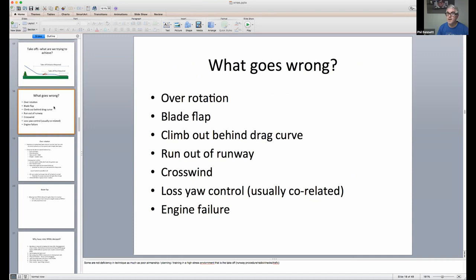So, take-offs. What goes wrong? I'm going to rattle through these because we've got some material left to cover. But, the things that go wrong in take-off: either over-rotation, blade flap, climb out behind a drag curve, or in some people's language, climb out behind a power curve, they run out of runway, they don't deal with the crosswind very well, they lose control, and that's usually correlated to something else. So, typically, they get, they over-rotate the aircraft like this, and then they get some yaw event, which finishes the whole thing off.